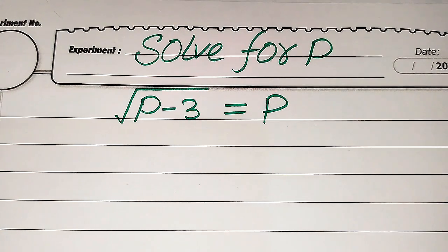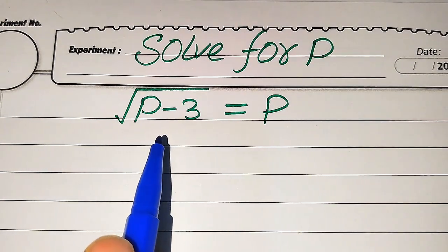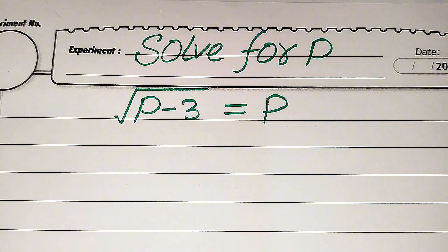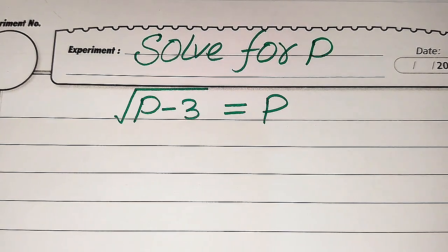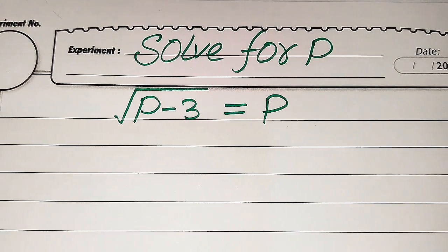Hello everyone. How to solve this nice radical problem: √(P − 3) = P. We will solve this problem for all values of P. First we find all the roots of this equation, and at the end we will verify which of the roots are solutions and which are extraneous roots. I hope you like this method, but if you have another method in mind, please don't hesitate to write it in the comment section.